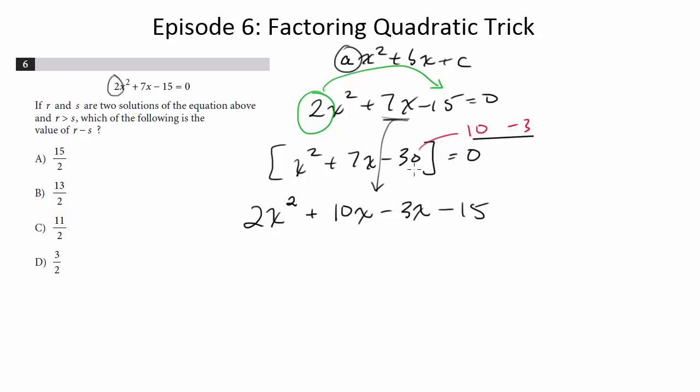Now you might say, well, what good is this? Well, now what you're going to do is factor by grouping. Take a look at each of these and see what you can factor out of them. So this guy, I can factor out a 2x. And when I do that, I'm going to get x plus 5.